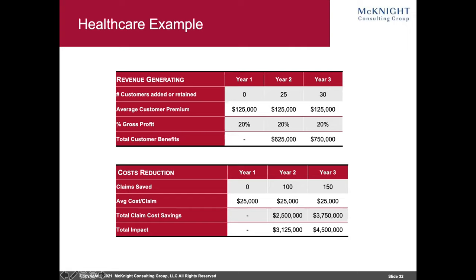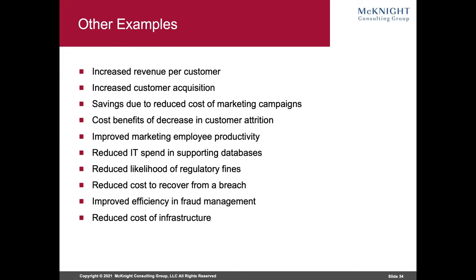Here's a healthcare example: a project to reroute claims to best-of-breed providers — so if you're having a C-section or ACL repair, you go to better physicians, which means better results and fewer claims down the road. The average cost of a claim is $25,000, so reducing claims adds up fast. By year three, just saving on claims generates $4.5 million. At the same time, the project attracts customers who like going to better doctors — adding perhaps 30 corporate customers in year three, which also contributes to gross profit on premiums.